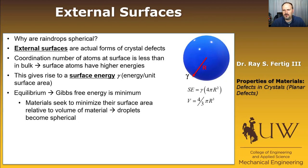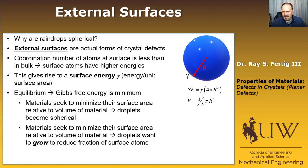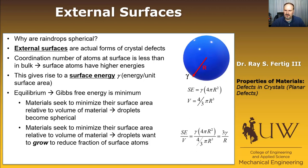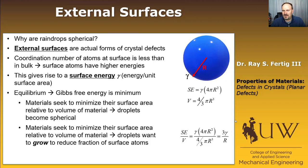Because materials seek to minimize their surface area, droplets want to grow to reduce the fraction of their atoms that are on the surface. The surface energy per unit volume is the surface energy of the droplet divided by the volume, which gives us 3γ/r. To reduce this quantity, we need to make r larger — that's the driving force for growth. So surface atoms have lower coordination number than in bulk, which drives the energy up, creating a high-energy region we'd like to minimize thermodynamically.